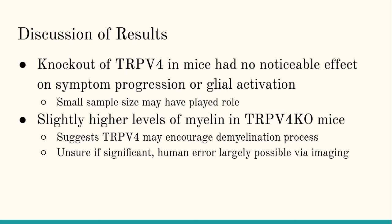Overall, the knockout of TRP-V4 in mice had no noticeable effect on symptom progression or glial activation. However, there might be slightly higher levels of myelin in TRP-V4 knockout mice, which suggests that TRP-V4 may encourage a demyelination process in mice that have it.